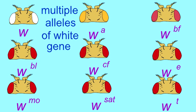Other mutations in this white gene include white buff, white blood, white coffee, white eosin, white mottled orange, white satsuma, and white tinged.